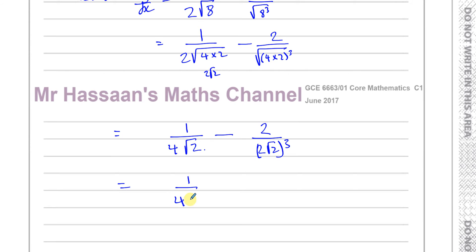So let me then simplify this. I have 1 over 4 root 2. Not yet, I've got to cube that first. We're going to have minus 2 over, this is going to be 2 cubed, which is 8 times root 2 cubed. Now, root 2 cubed is going to be basically root 2 times root 2 times root 2, which is 2 root 2. So this is going to give me 2 times root 2. So I have 8 times 2 root 2.